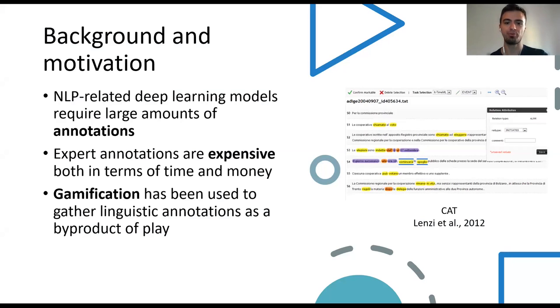In the field of natural language processing, we need many linguistic annotations in order to train deep learning models, which are quite data hungry. On the right, you can see an example of a standard annotation tool, CAT, that is used to collect linguistic annotations.